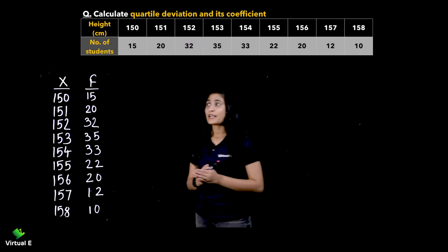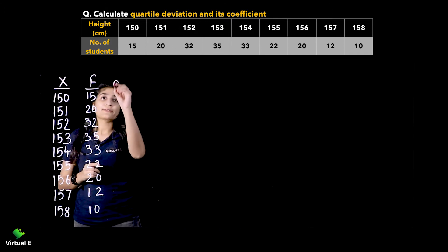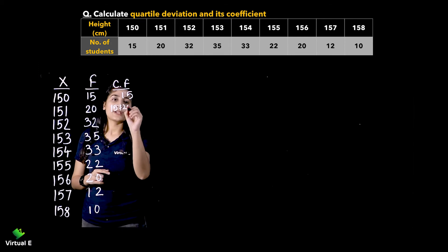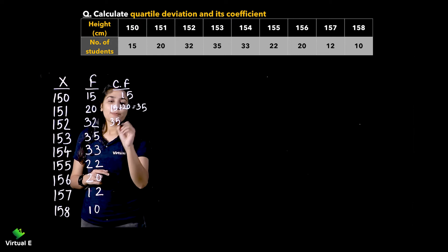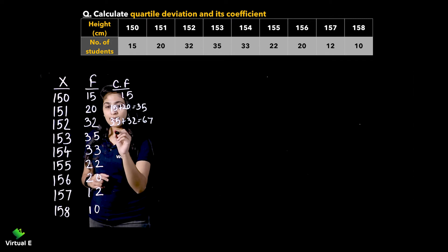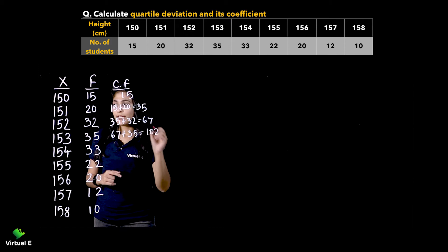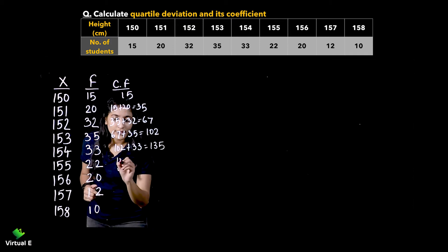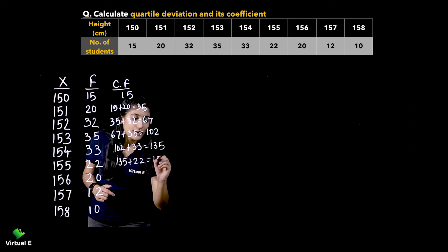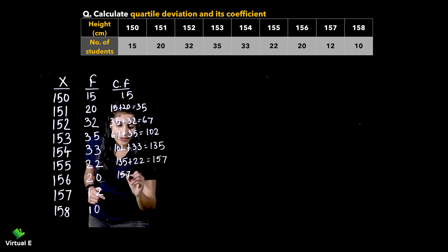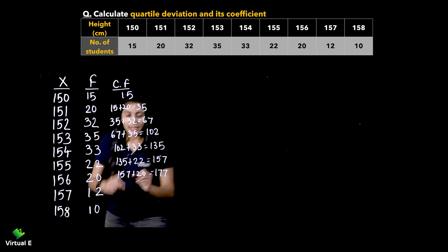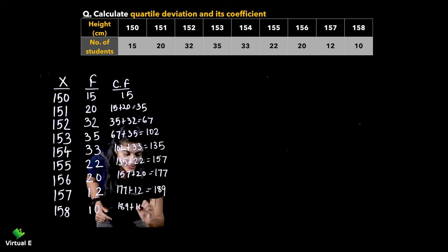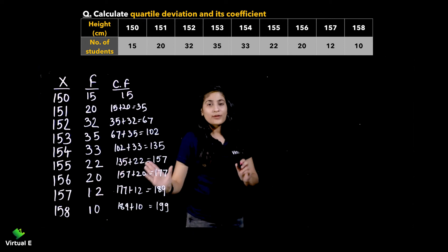Starting with the second numerical of discrete series. X and F values are given. First, we calculate the cumulative frequency. Starting: 15 remains 15. 15 plus 20 gives 35. 35 plus 32 gives 67. 67 plus 35 gives 102. 102 plus 33 gives 135. 135 plus 22 gives 157. 157 plus 20 gives 177. 177 plus 12 gives 189. 189 plus 10 gives the final value of 199.